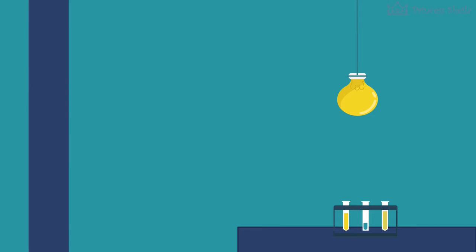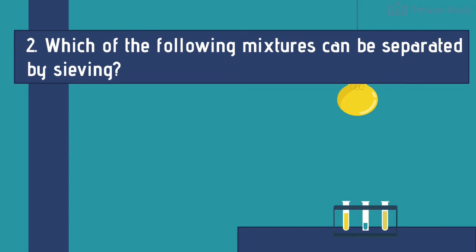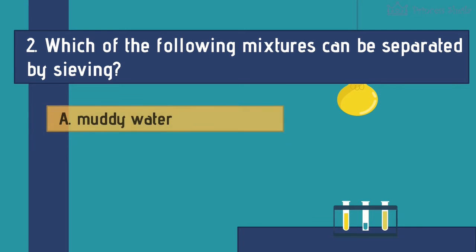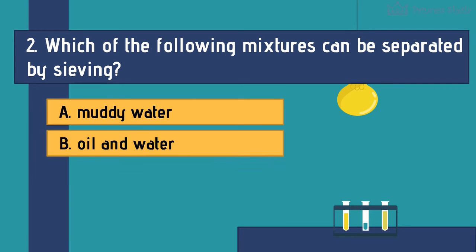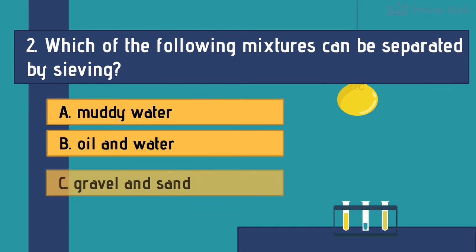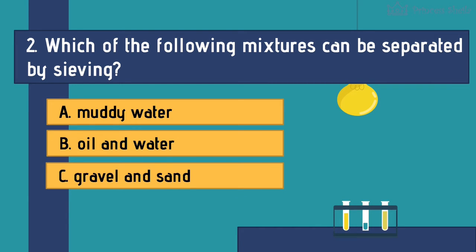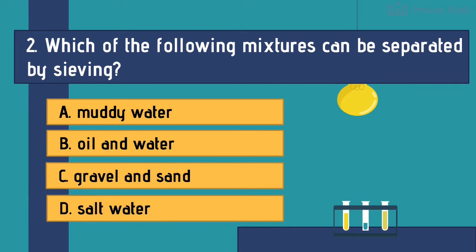Number 2: Which of the following mixtures can be separated by sieving? A. Muddy water. B. Oil and water. C. Gravel and sand. D. Salt water.